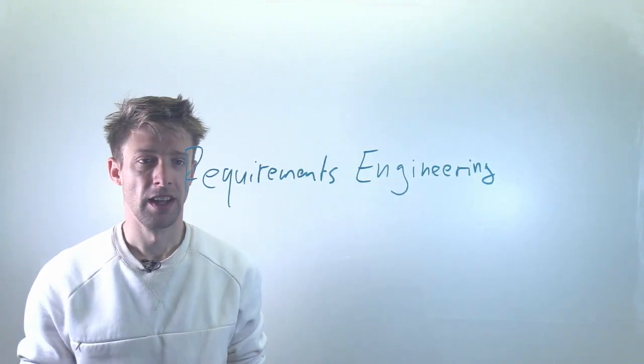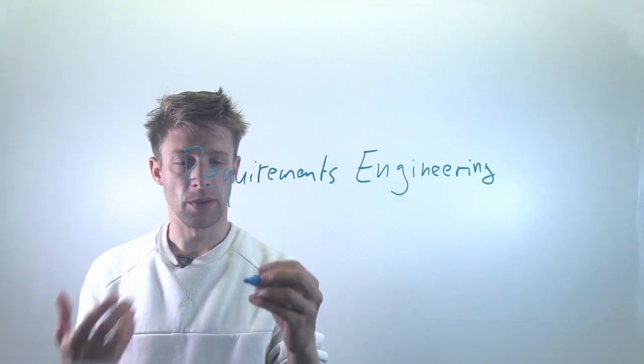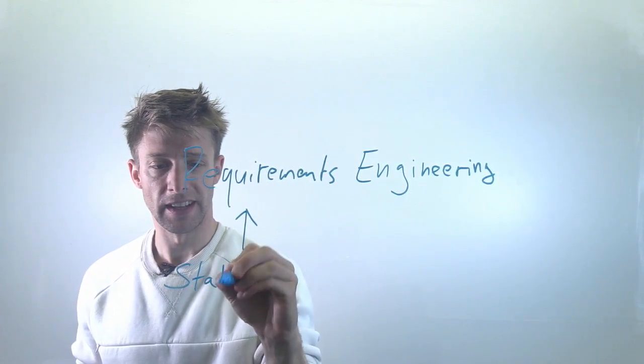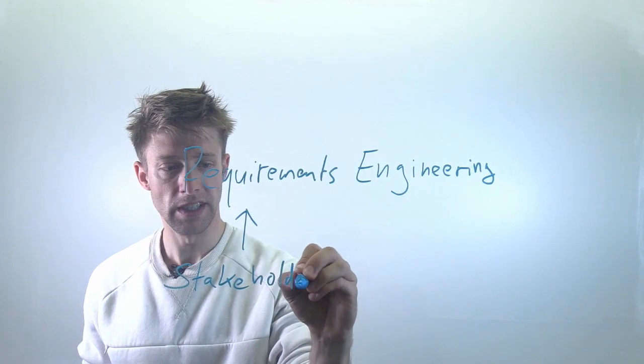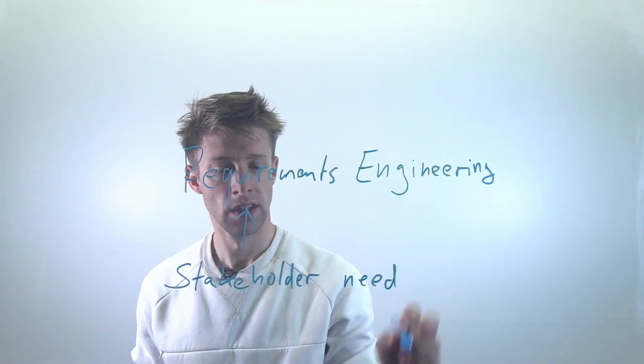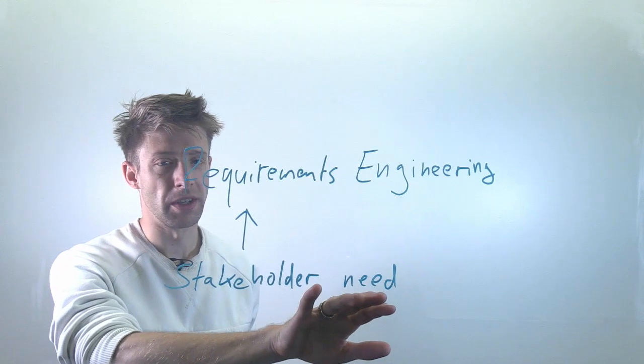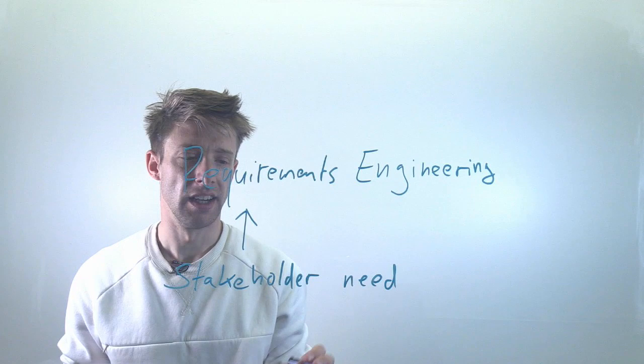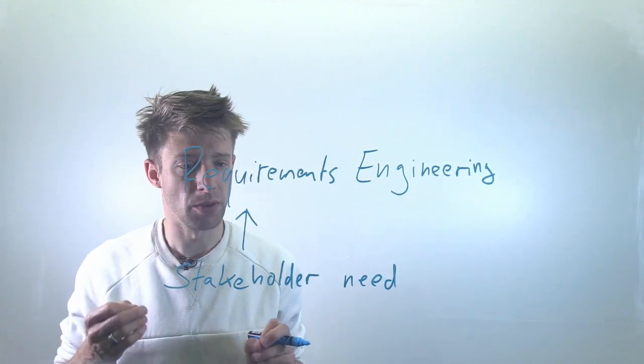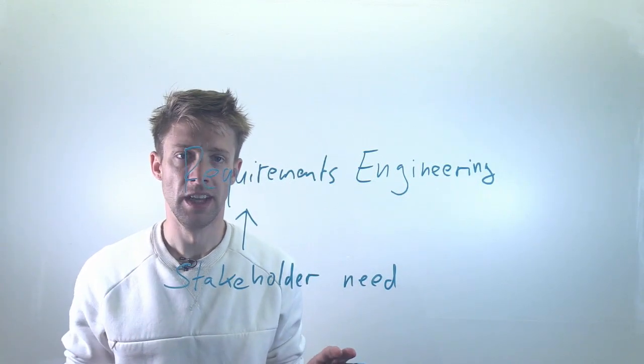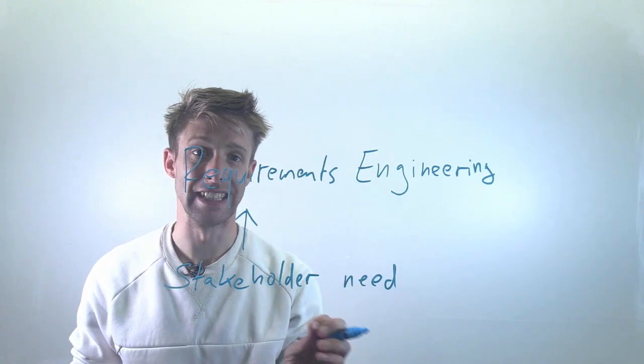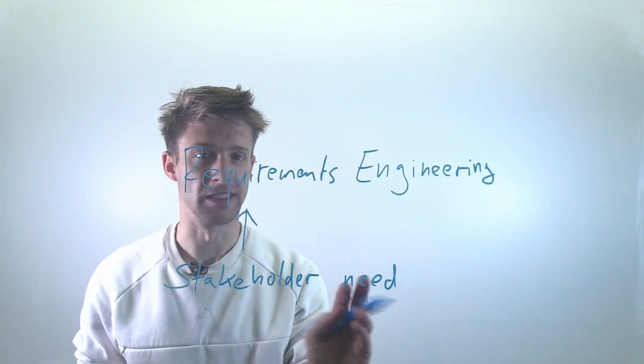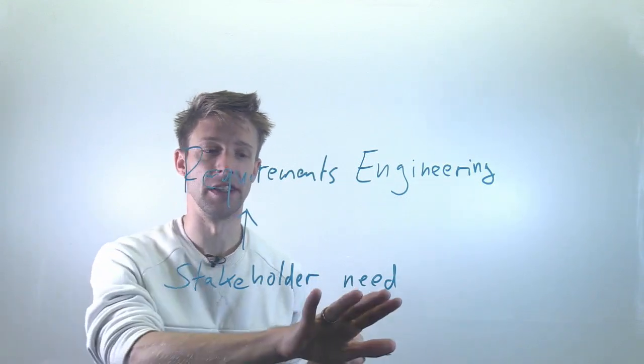Basically, a requirement is in the literature something that a stakeholder needs. It's a stakeholder need. This is not a very easy process because it's not about what they want, it's what they need. That is in practice quite a difficult difference because the user, for instance, might be able to tell you exactly what they want but they might not know what they need. In many cases they will not even be able to tell you what they want, so figuring this out is not easy.